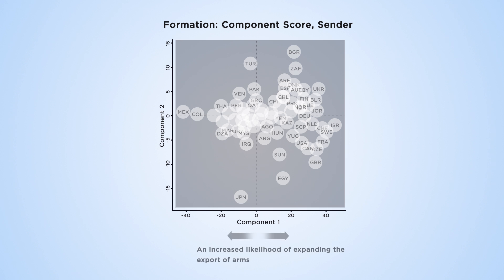For example, a high score for Component 1 shows countries with a high tendency to export arms, and a high score for Component 2 exhibits countries which have increased their exports over time.